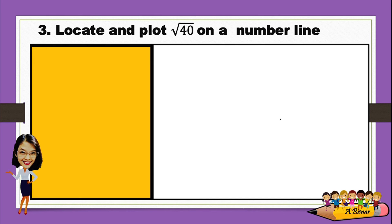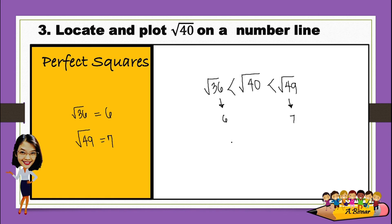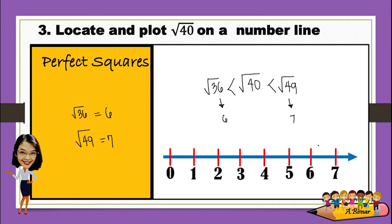Another: the square root of 40. Let us list some of the perfect squares near 40. We have the square root of 36, which is 6, and the square root of 49, which is 7. From here, we can say that the square root of 40 is between the square root of 36 and the square root of 49, so the square root of 40 is somewhere between 6 and 7.